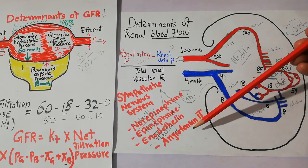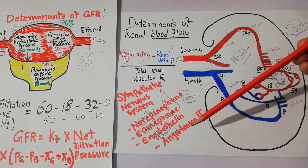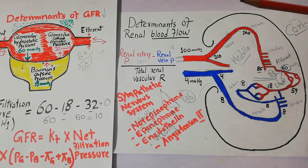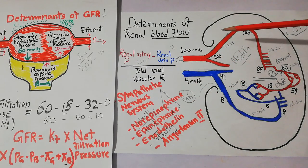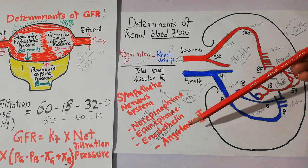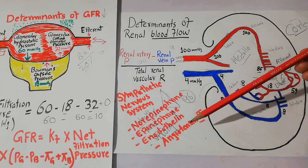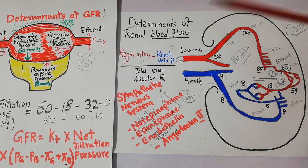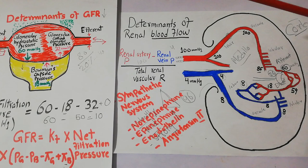Angiotensin 2 is basically a hormone and an autocoid because it is formed in the systemic circulation and is released from the kidney as well. Angiotensin 2 effects are important in conditions in which the arterial pressure is low or there is severe depletion of blood volume.